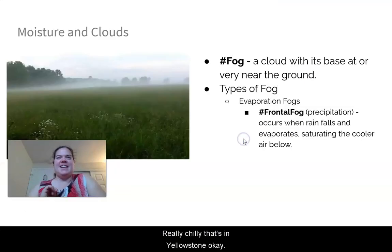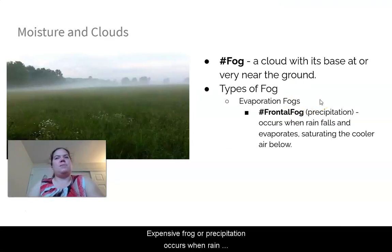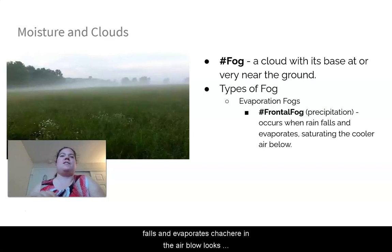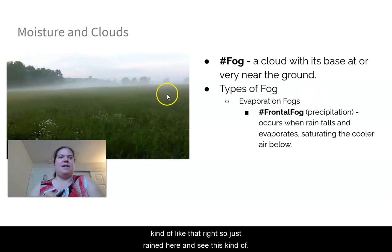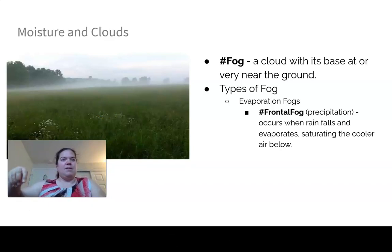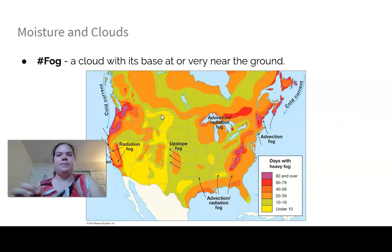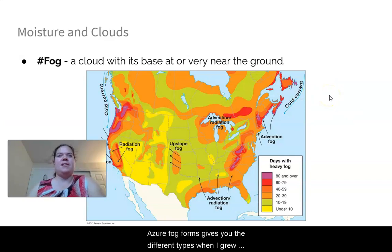The fifth type is frontal fog (precipitation fog) — when rain falls and evaporates, saturating the air below. You see this as a low cloud on the ground just after rain, or as steam rising from a warm parking lot after a rain shower.